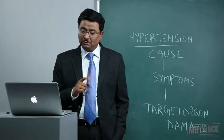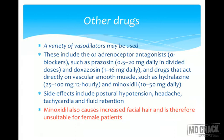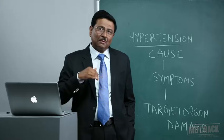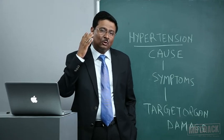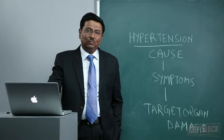Labetalol 200 mg to 2.4 g daily in divided doses and carvedilol are combined beta- and alpha-adrenoreceptor blockers, which are sometimes more effective than pure beta blockers. Labetalol can be used as an infusion in malignant phase hypertension. Other drugs include vasodilators such as alpha-1 adrenoreceptor antagonists (alpha blockers) like prazosin 0.5–20 mg daily in divided doses and doxazosin, and drugs acting directly on vascular smooth muscle such as hydralazine or minoxidil. Side effects of vasodilators include postural hypotension, headache, tachycardia, and fluid retention. Minoxidil causes increased facial hair and is therefore unsuitable for female patients.